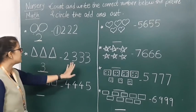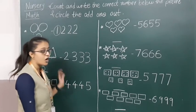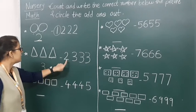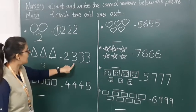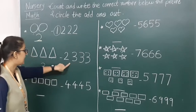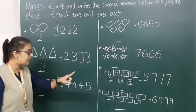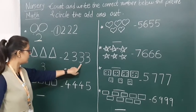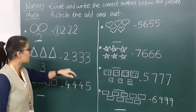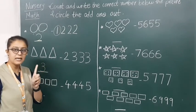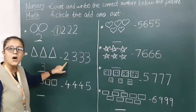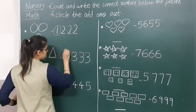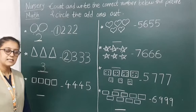So now we will find the odd one. Here two is the odd number. There are three number 3s — one, two, three — and only one number 2, so number 2 is the odd number. So we will make a circle on it.